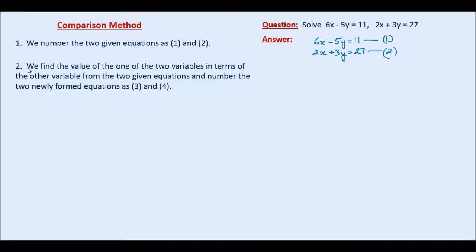Step number two. We find the value of one of the two variables in terms of the other variable from the two given equations and number the two newly formed equations as number three and number four. So we can either express x in terms of y or y in terms of x. Let us select x and express x in terms of y from both equations.